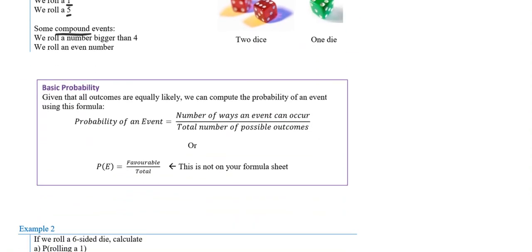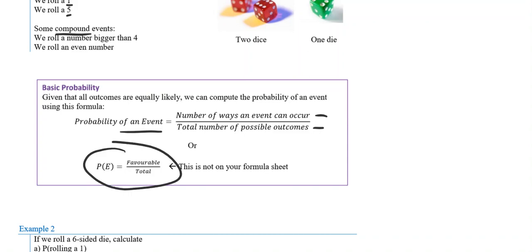Here's your formula for probability — definitely need to know this one, and it's great to have in your everyday math toolkit. Given that all outcomes are equally likely, we can compute the probability of an event using this formula. For a die, it's just as likely to get one as to get five — they're all equally likely. So the probability of an event is the number of ways an event can occur over the total number of possible outcomes.